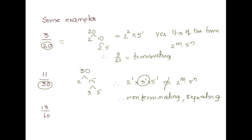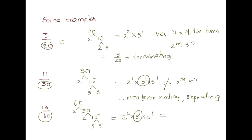Next: denominator 60. Prime factors of 60: 2 into 30, 2 into 15, 3 into 5, so 2^2 into 3^1 into 5^1. It is also not of the form 2^m into 5^n — it contains 3. Therefore it is also non-terminating or repeating.